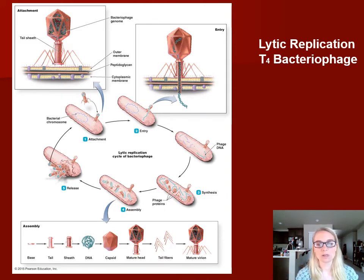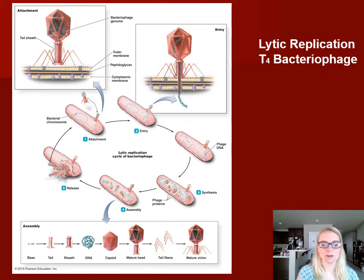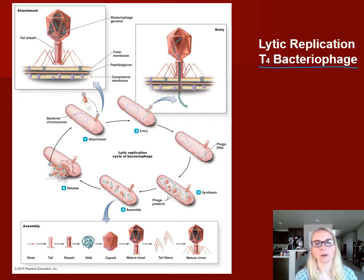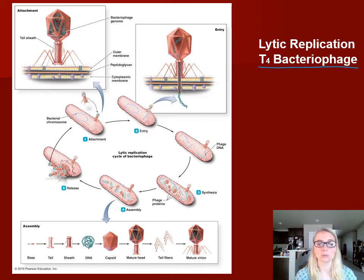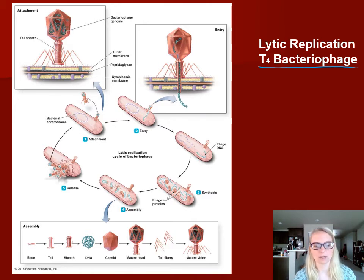The first one is called a lytic replication cycle, and we're going to follow the bacteriophage called T4. T4 bacteriophage is probably one of the most commonly studied — I think it was the first bacteriophage that was identified and readily studied, and it targets E. coli, which was one of the first bacteria that was readily studied. So that kind of makes sense.